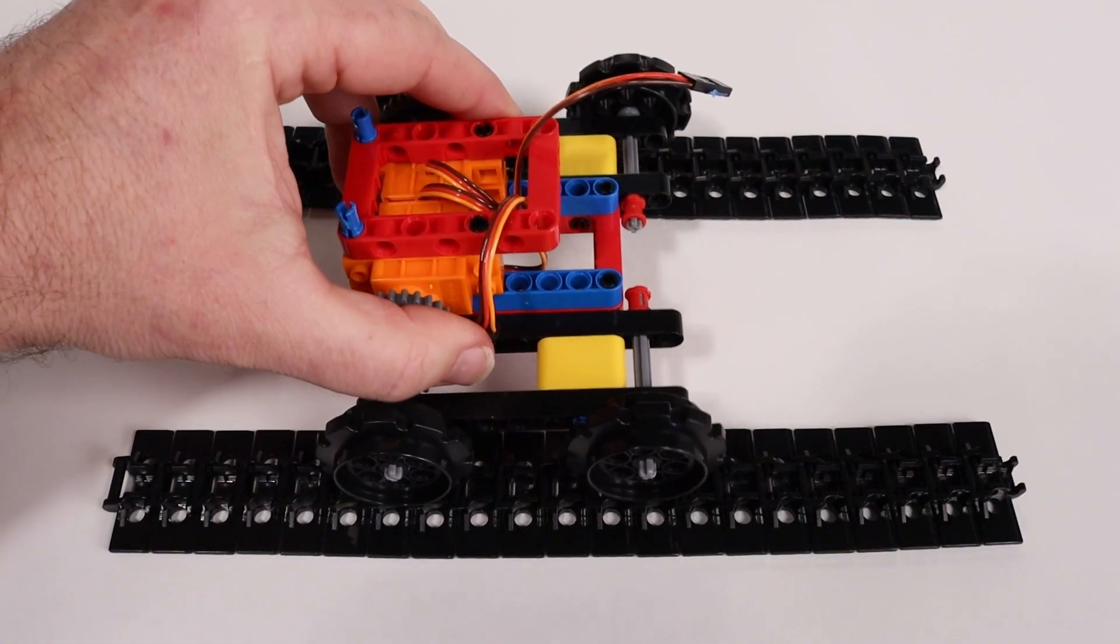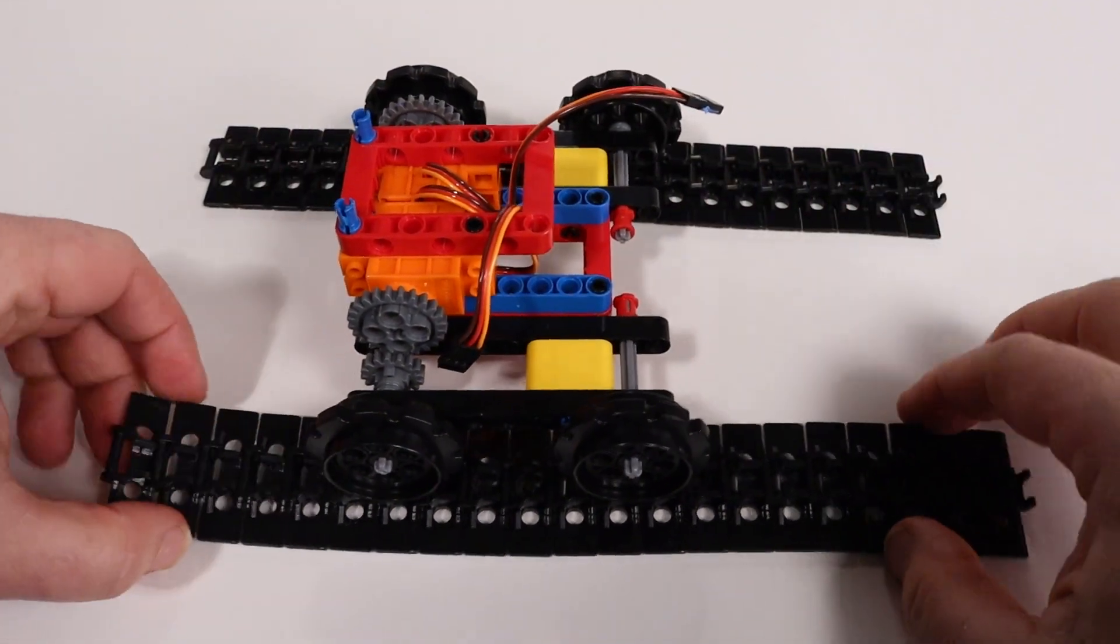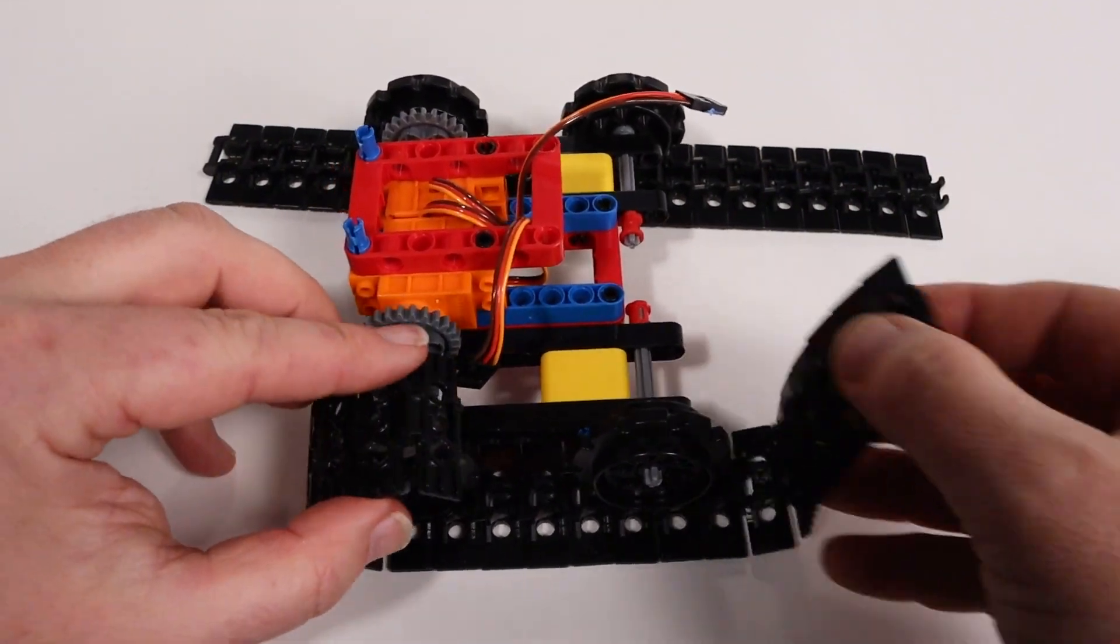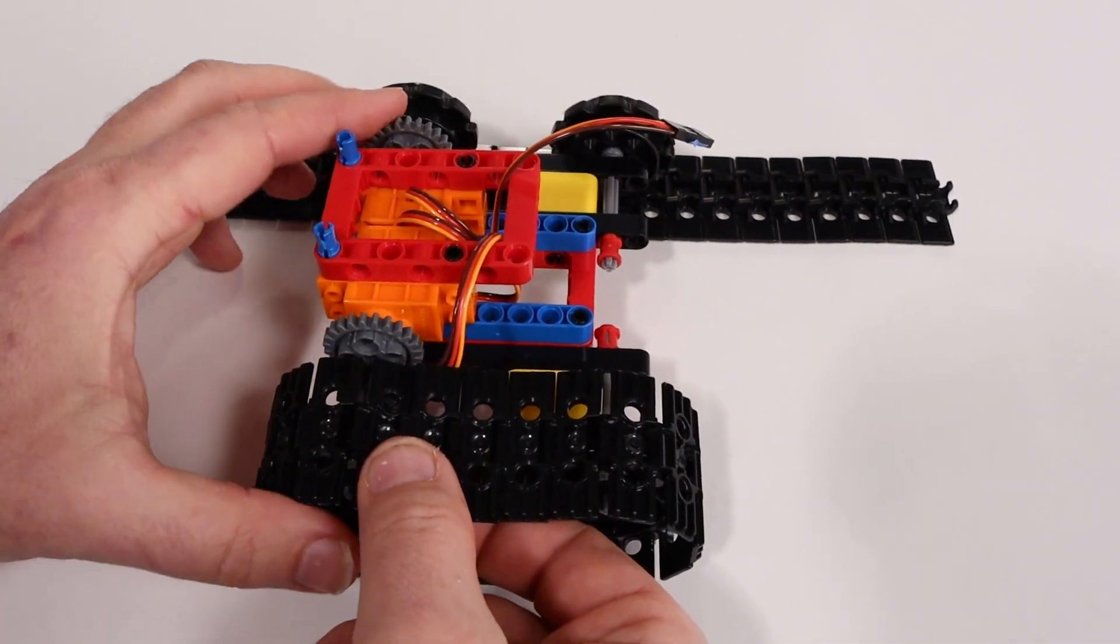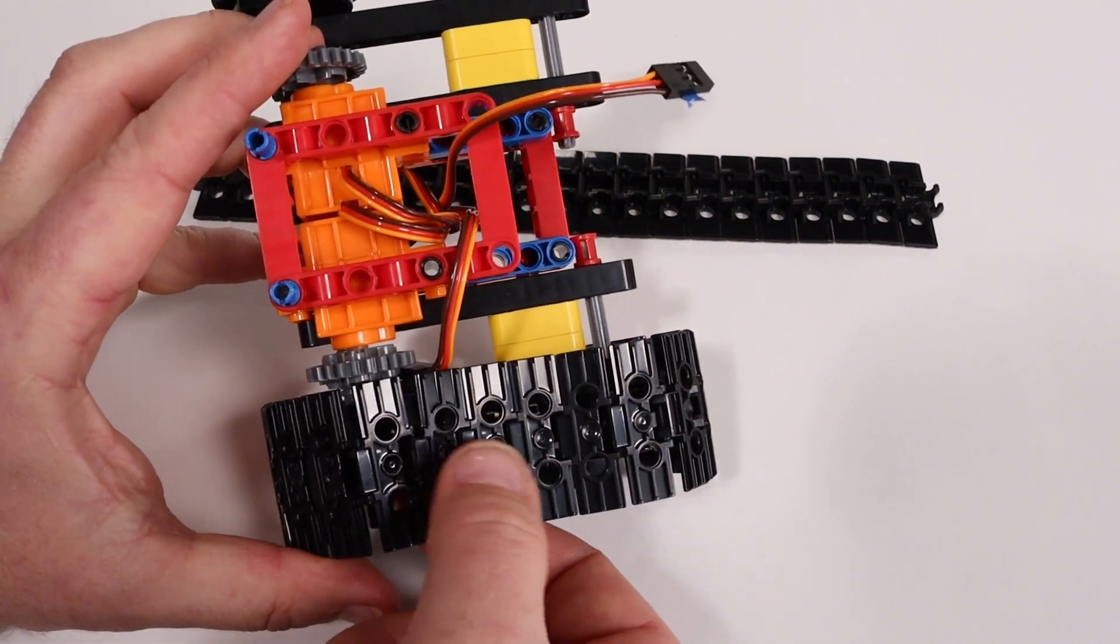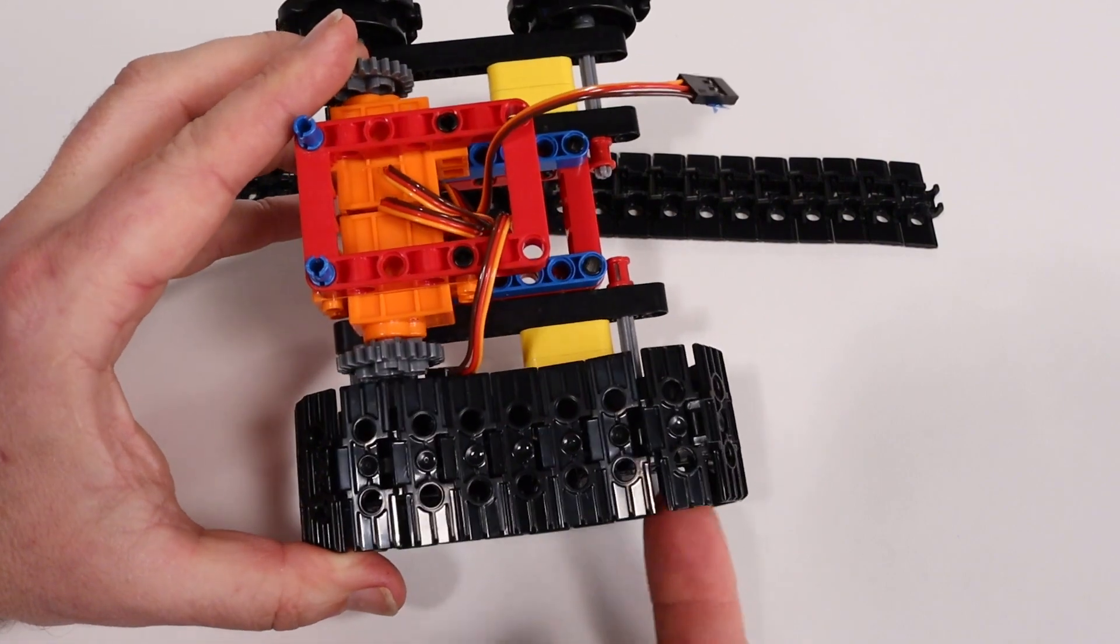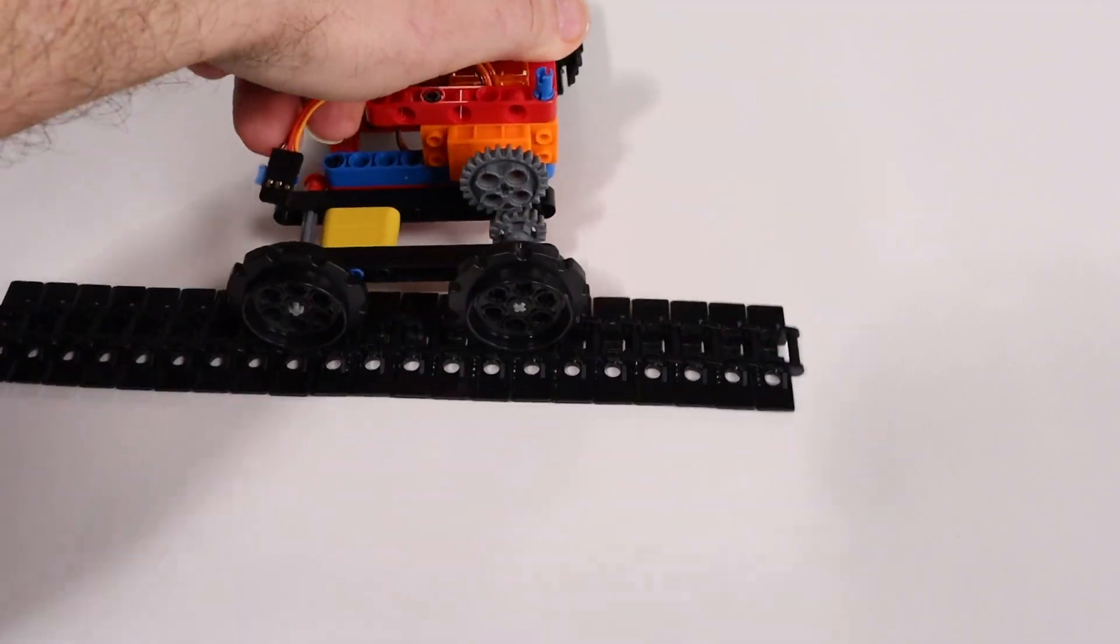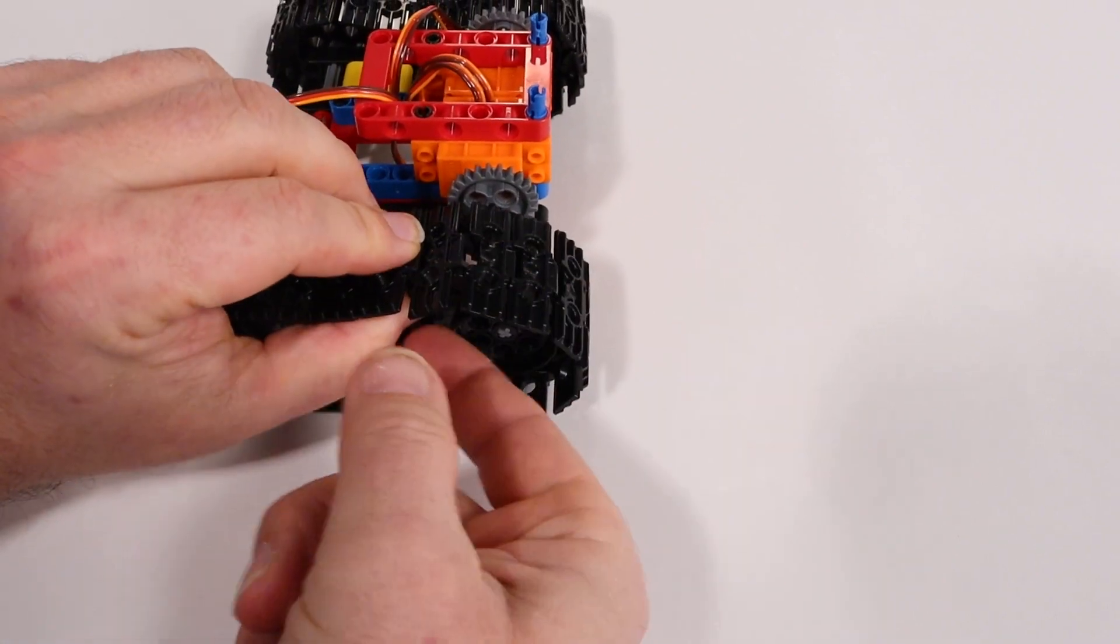Place the tank onto the tank treads with the sprockets centered on the tracks. Wrap the tracks around the sprockets and line up the ends. Then snap the first piece and the last piece together. Do the same for the tank tread on the other side.